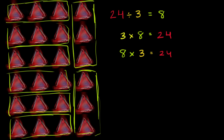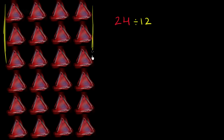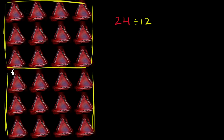Now let's make things more interesting. Based on what we just saw, what is 24 divided by 12? I encourage you to pause the video, draw out 24 triangles, and try to figure it out. Well, there are two ways to think about 24 divided by 12. You could say let's divide 24 into groups of 12 and think about how many groups we have. This is one group of 12, and then here is another group of 12. So how many groups of 12 do we have? We have two groups of 12. So we could say 24 divided by 12 is 2.